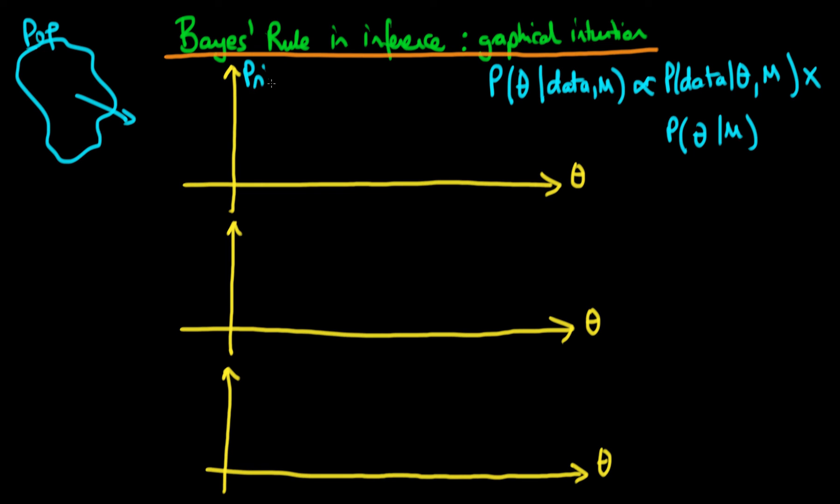So we started off by thinking about what was our prior in this particular circumstance. The two values of theta which we're supposing is either theta equals zero, the tribe doesn't have the disease, or one, in which case they do. We were sort of ambivalent beforehand, we didn't know whether the tribe would have the disease or wouldn't. So we represented here the two heights because we're talking about a probability mass function as being the same.